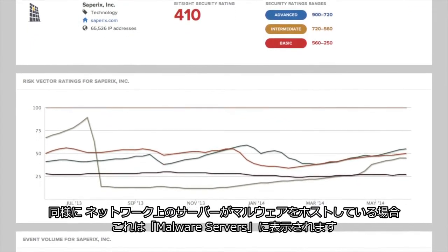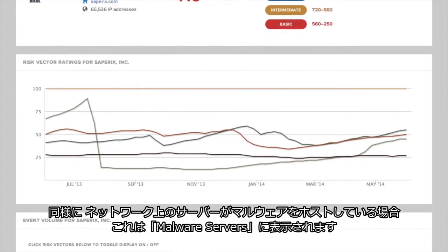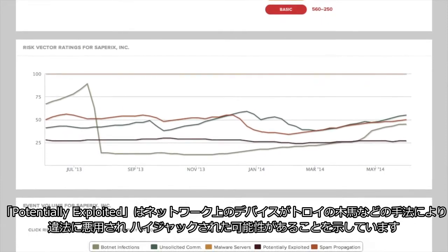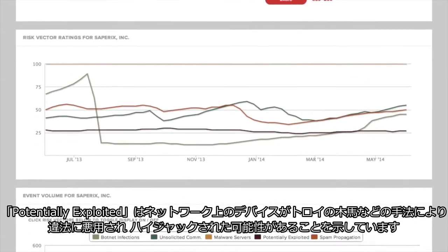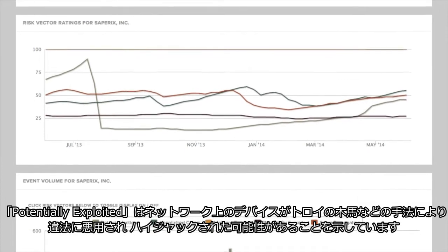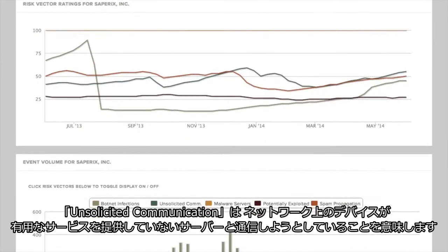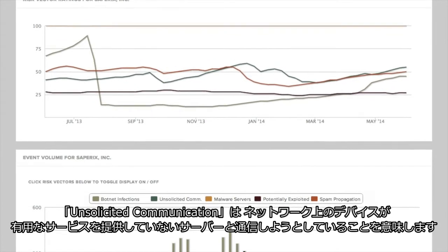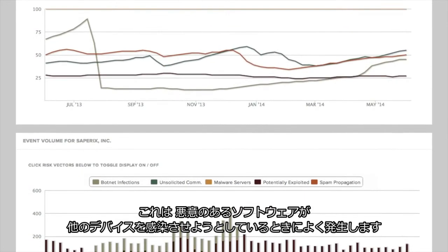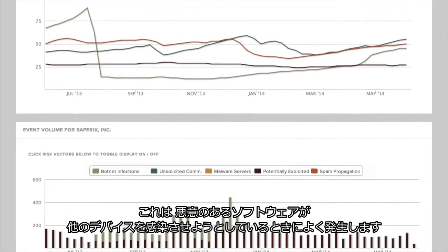Likewise, if a server on your network is hosting malware, this will be shown in malware servers. Potentially exploited indicates that a device on your network may have been hijacked by an illegal third-party exploit such as a Trojan horse. Unsolicited communications means that a device on your network is attempting to communicate with a server that isn't providing any useful services. This often happens when malicious software is seeking other devices to infect.